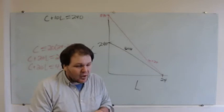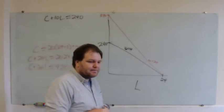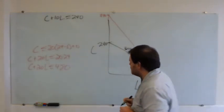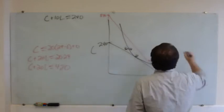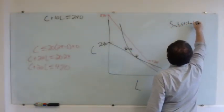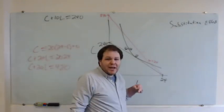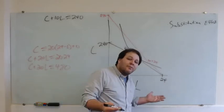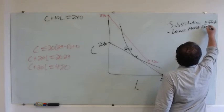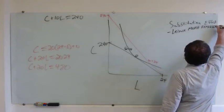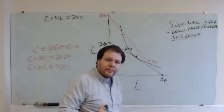Let's think about how we expect our choices to change as a result of this increase in wage, in terms of income and substitution effects. First, let's think about the substitution effect. Did leisure get more expensive or cheaper as a result of my wage increase? Leisure got relatively more expensive — an hour of my time now costs me $20. So the substitution effect should lead us to take less leisure.